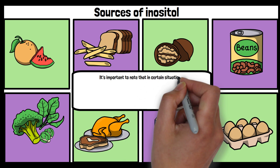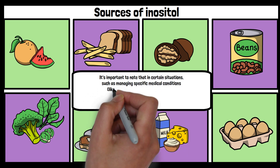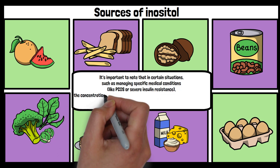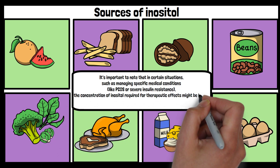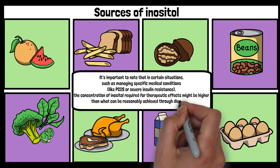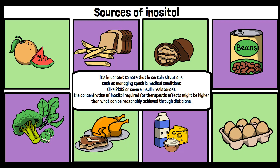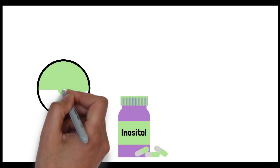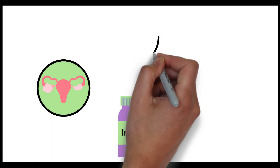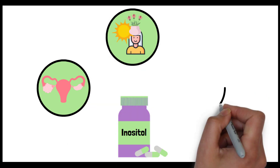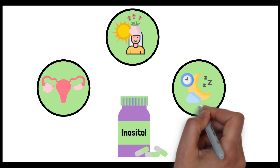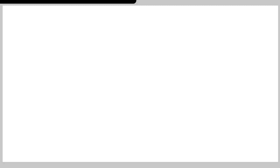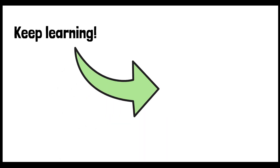However, it's important to note that in certain situations, such as managing specific medical conditions like PCOS or severe insulin resistance, the concentration of inositol required for therapeutic effects might be higher than what can be reasonably achieved through diet alone. In summary, inositol is a type of sugar alcohol that is great for helping with insulin sensitivity, particularly beneficial for conditions like PCOS and type 2 diabetes. It plays a role in mental health — treating conditions like depression, anxiety, and panic disorder — and is beneficial for improving sleep by regulating neurotransmitters. Thank you for watching.